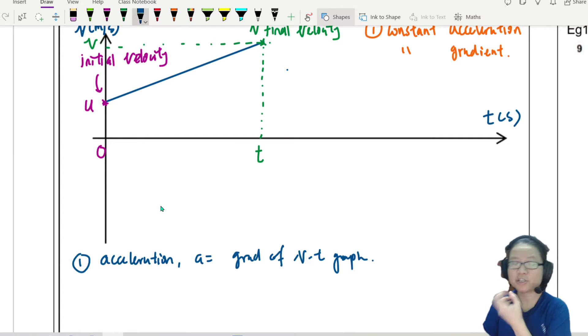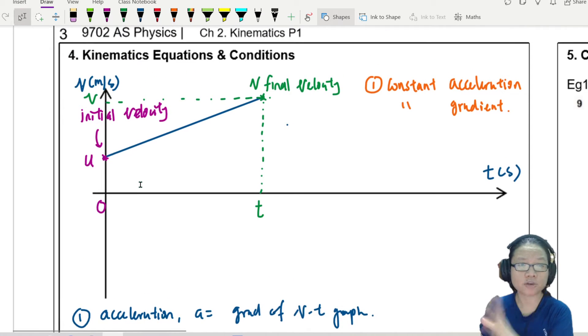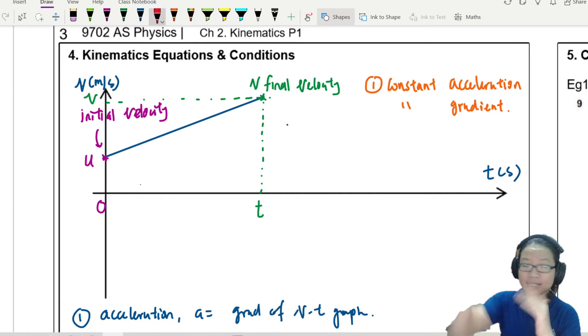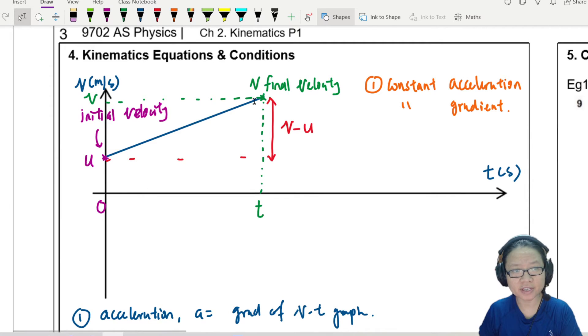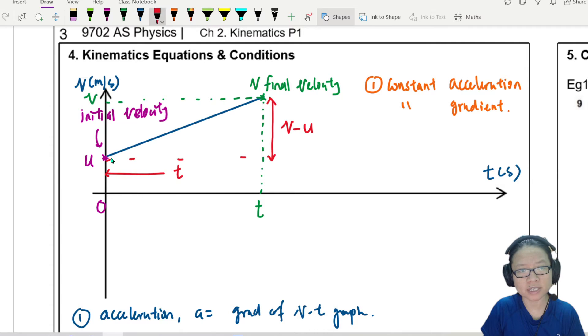So if acceleration is gradient of VT graph, now we're going to look at this line and try to write out an expression for gradient. To find gradient, I will take the height divided by the base. So if I extrapolate out, this distance here to here will be v minus u. u is not zero.